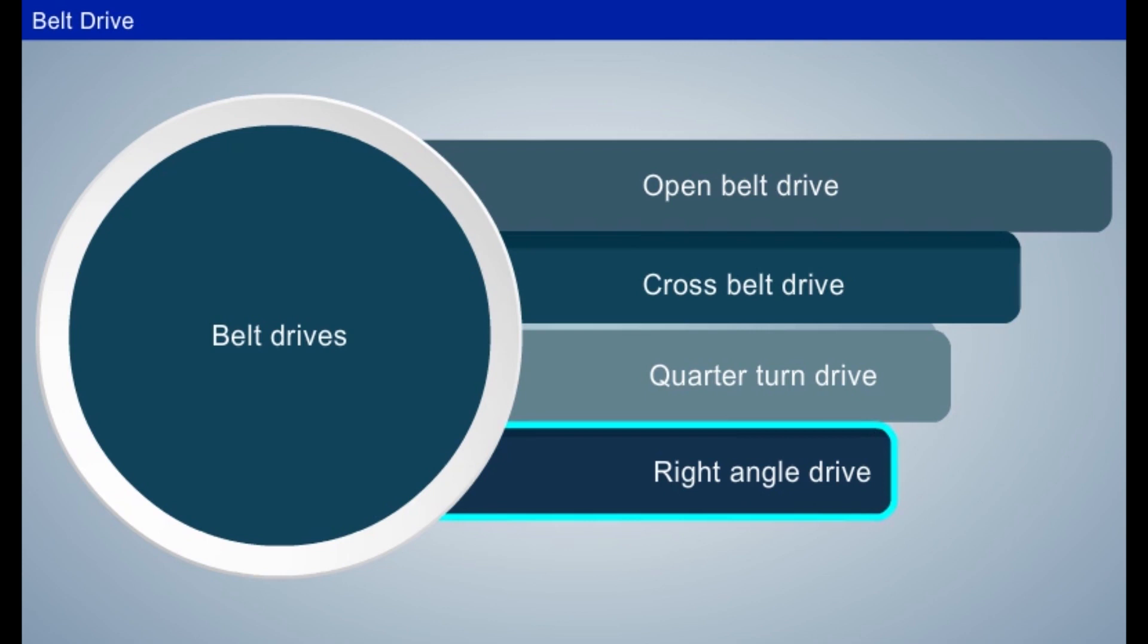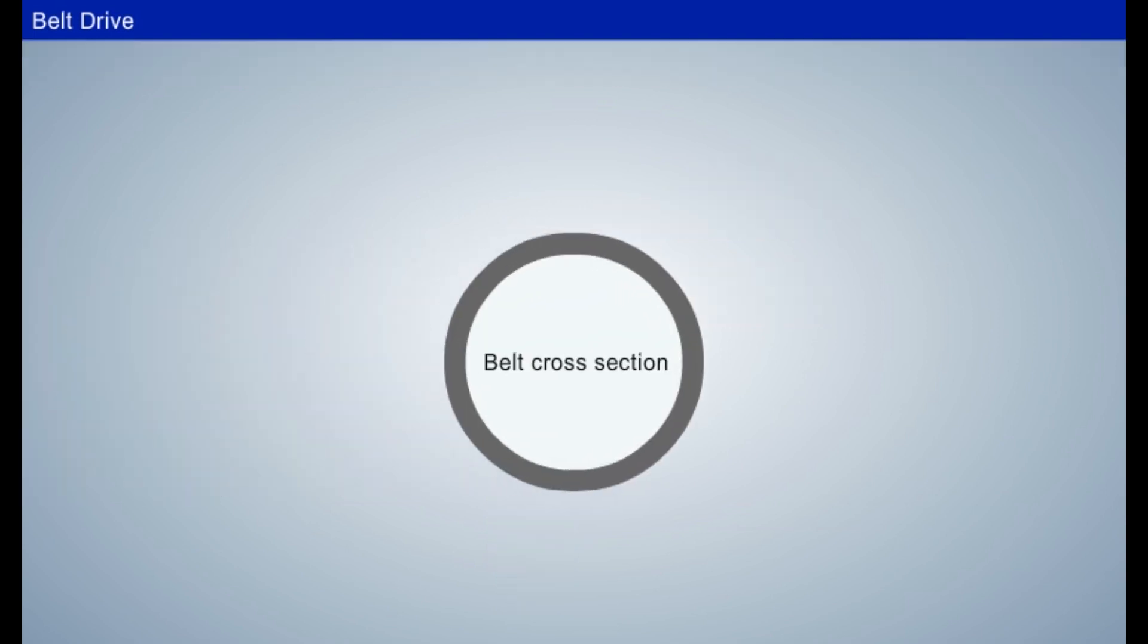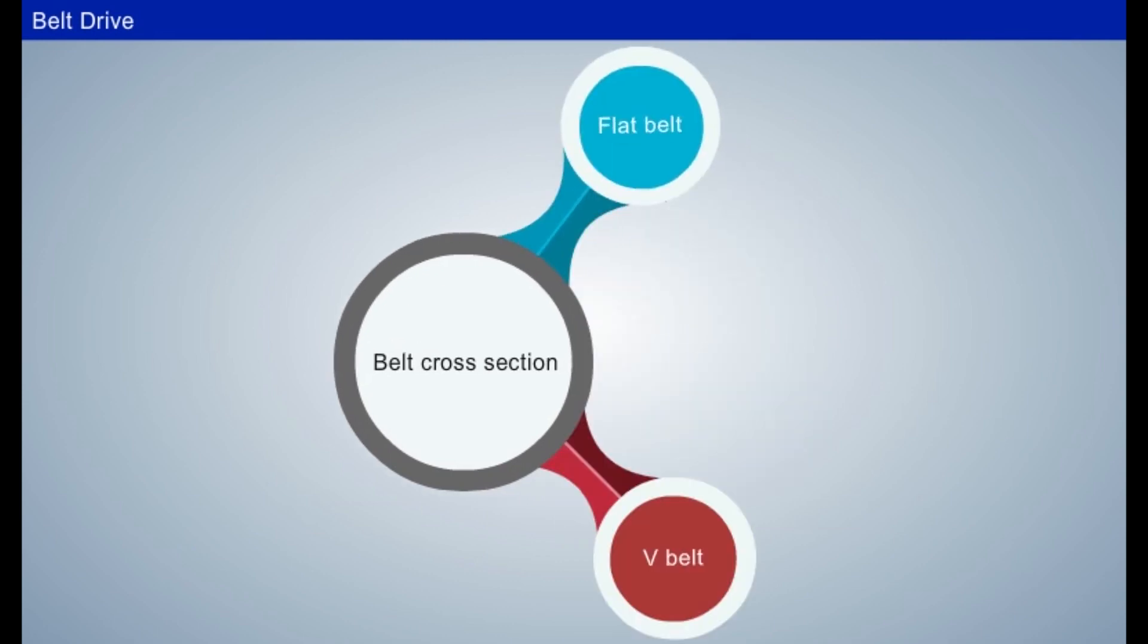Right angle drive: The two non-parallel shafts are connected using an additional guide pulley to direct the belt and also to adjust the tension of the belt. When we consider the belt cross-sections, it is classified as flat belt and V-belt.